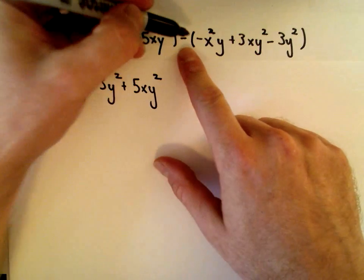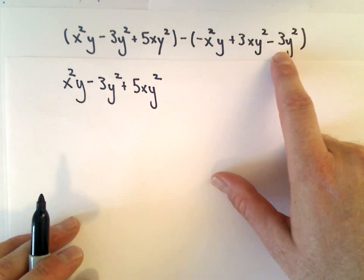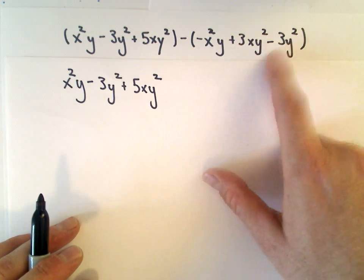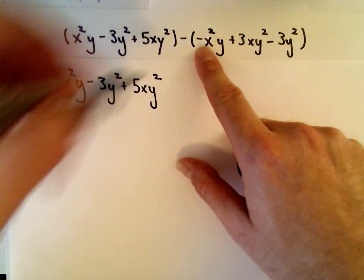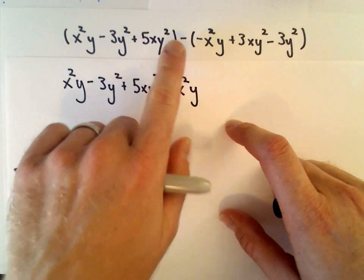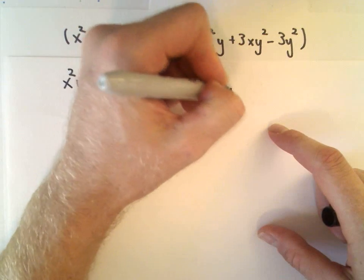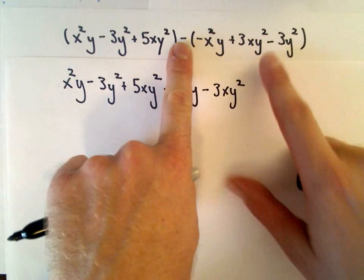Now, you can think about there being a negative one here. We'll have to distribute the negative to everything inside the parentheses, and it's just going to change the sign on each term. A negative times a negative will be a positive x squared times y. A negative times a positive will be a negative 3xy squared.